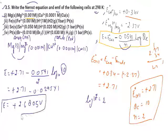So the EMF for part 1 is +2.6805 V. This is the answer for the first part of question 3.5. Students can try parts 2, 3, and 4 themselves as practice.